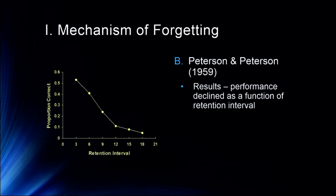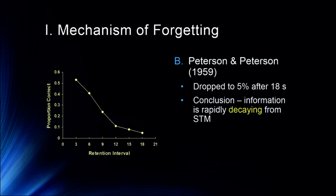Peterson and Peterson found that the proportion of correct trials declined as a function of retention interval. Going from 3 to 18 seconds, performance dropped dramatically — bottoming out around 12 seconds and falling to about 5% correct after 18 seconds. The conclusion was that information was rapidly decaying from short-term memory, suggesting a duration of perhaps 12 seconds.